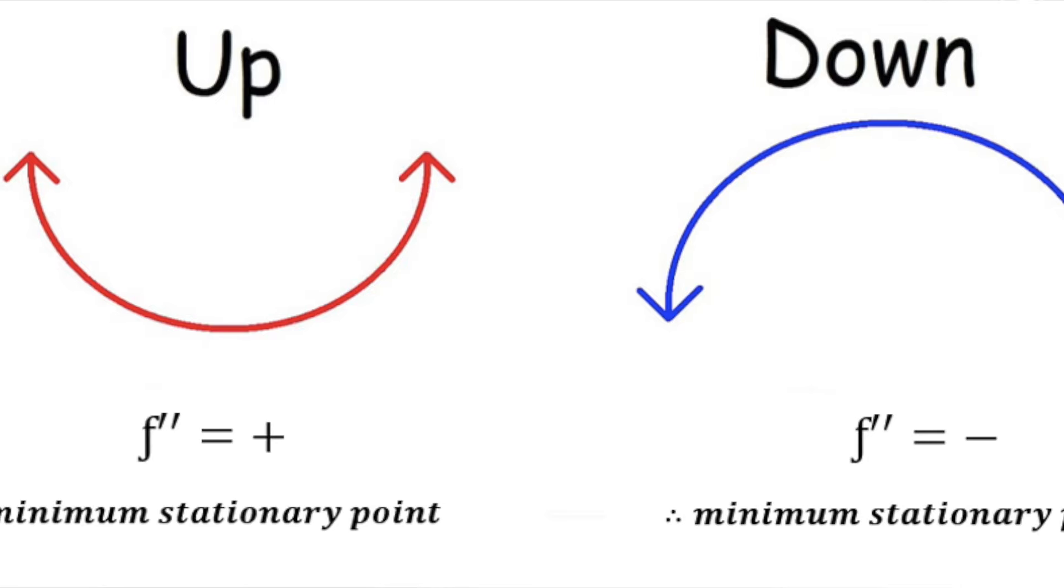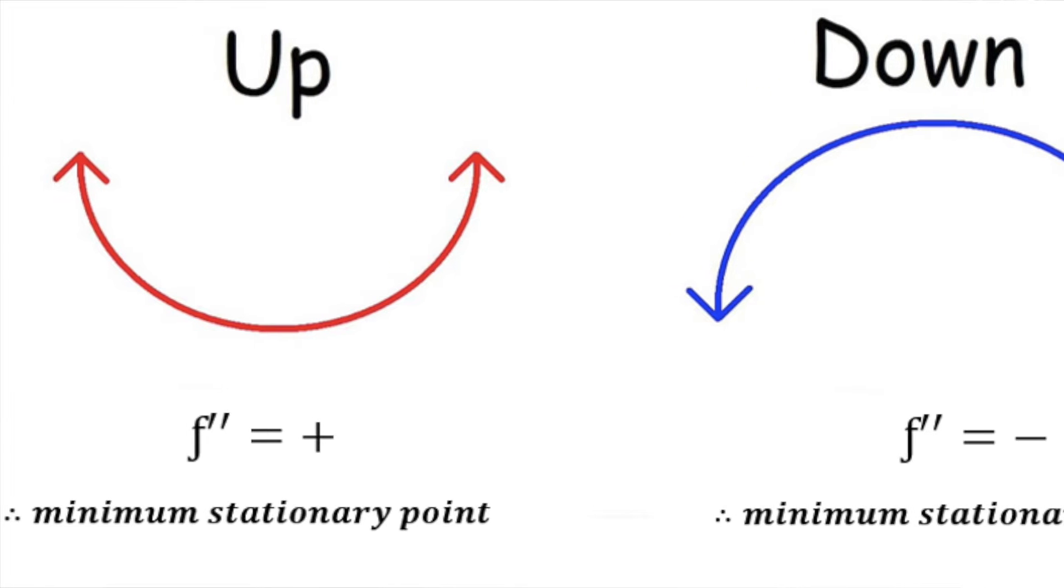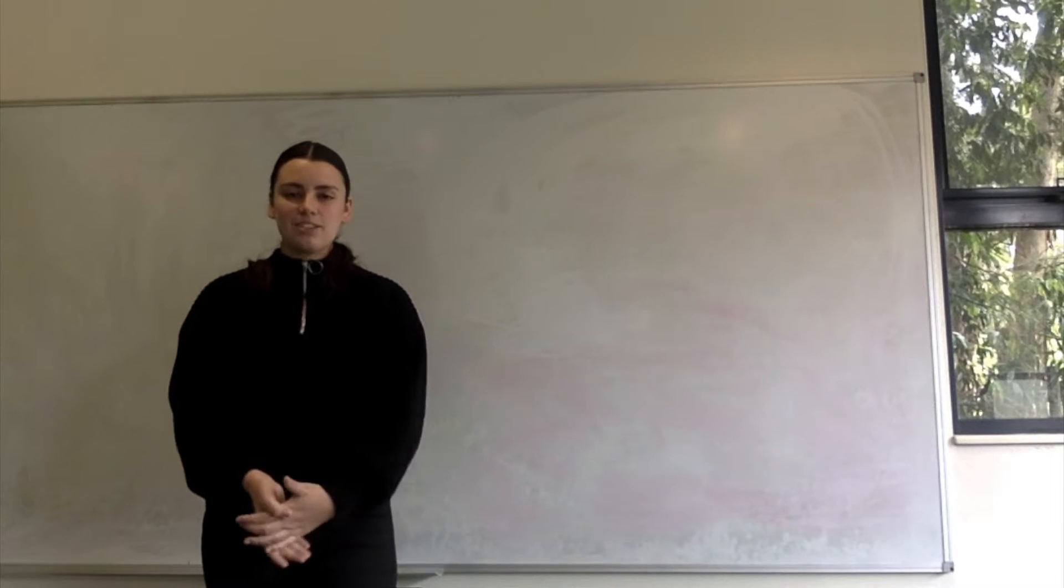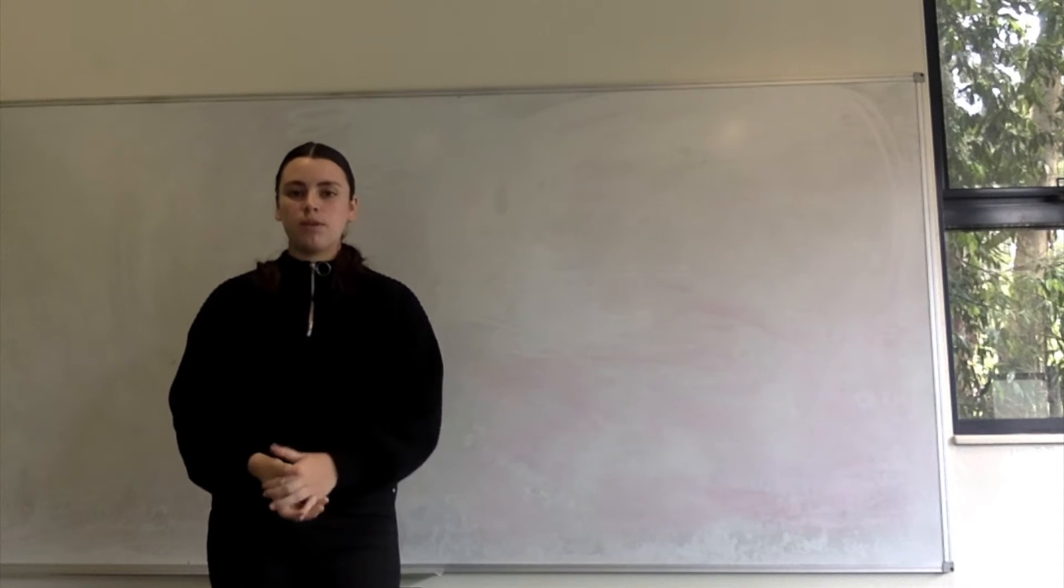If this provides us with a positive value, the graph is concave up. As we can see, this is where the graph changes from a decreasing to increasing function, and is therefore a minimum stationary point. As Tom will explain, the concept of the derivative can be used to find the minimum surface area of the cylinder.